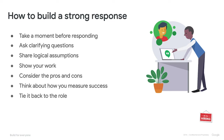Four is show your work — that means communicating your thought process to your interviewer. Communication is incredibly critical. As you're iterating through your solution, make sure you're also communicating it in a succinct and coherent manner. Once you come up with a solution, don't just leave it there — consider pros and cons or think about how you would measure success. And lastly, tie it back to the role if you can. These questions are often role-related, so connect your answer to the specific role you're applying for.